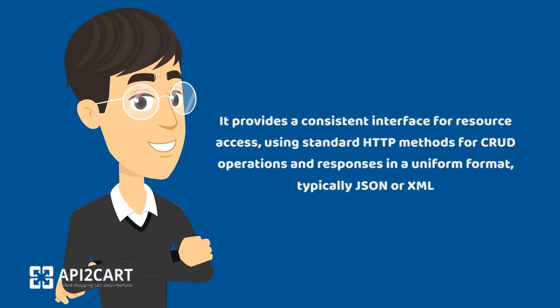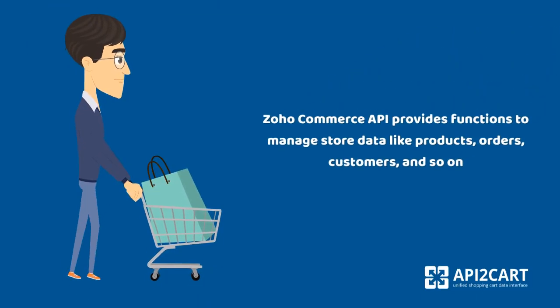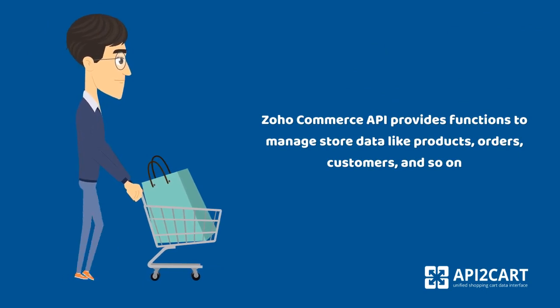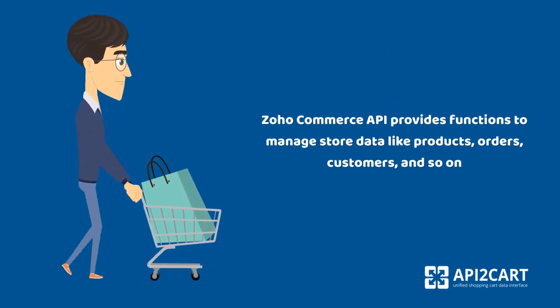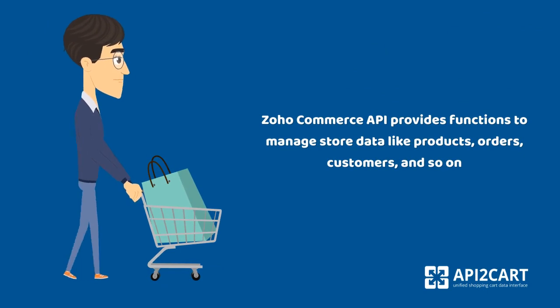It provides a consistent interface for resource access, using standard HTTP methods for CRUD operations and responses in a uniform format, typically JSON or XML. Zoho Commerce API provides functions to manage store data like products, orders, customers, and so on.